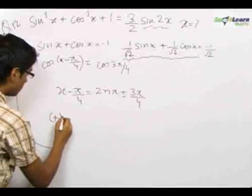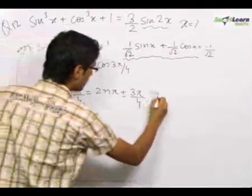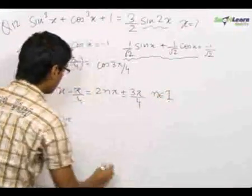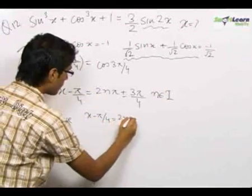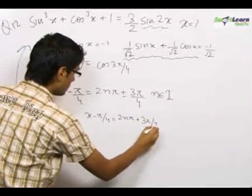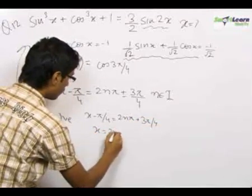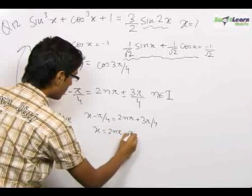Now, first taking the positive sign, n belongs to integers, we get x - π/4 = 2nπ + 3π/4. So we get x as 2nπ + π.